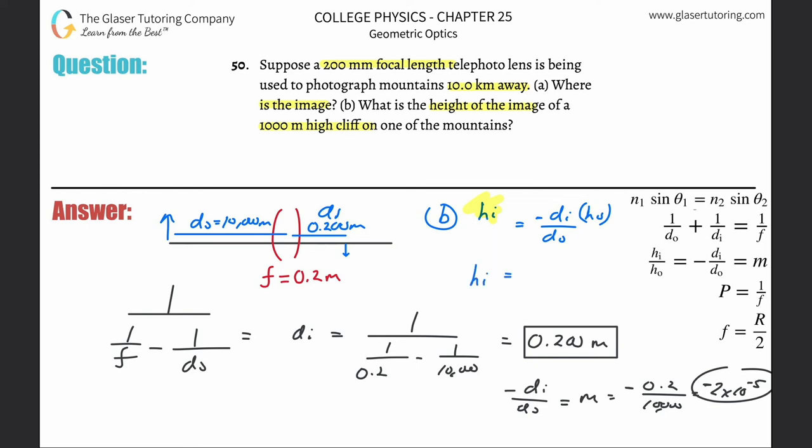Now we have our formula for image height. All we need to do is plug in. This is negative, di is 0.2, ho they told us is 1,000 meters. Notice all the units are consistent. Divide that by the object distance, which is 10,000. Take -0.2 times 1,000 and divide that by 10,000.